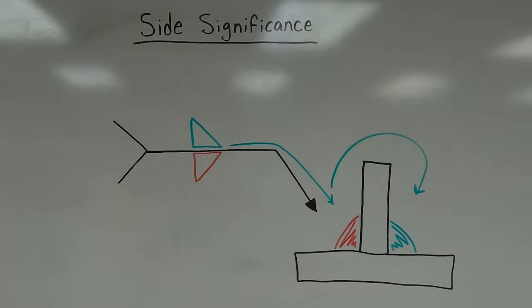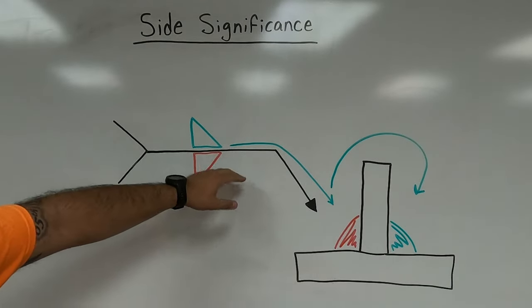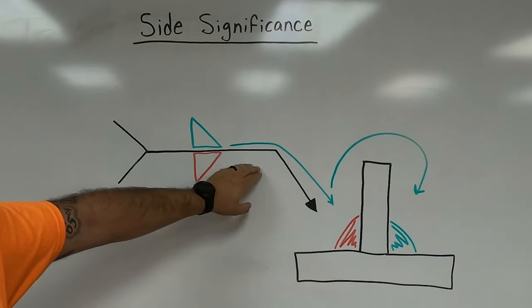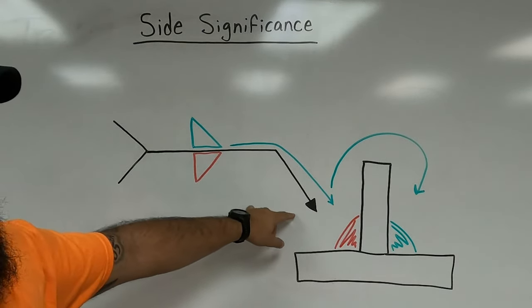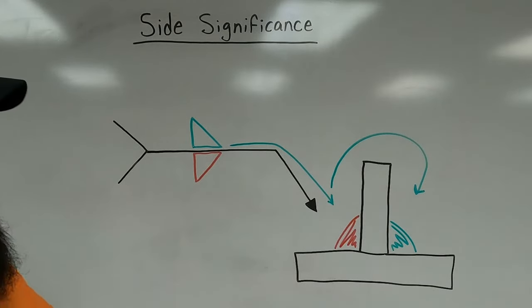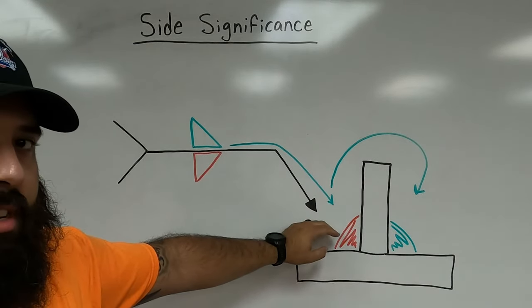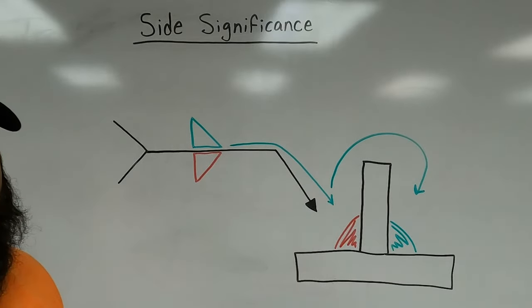That's essentially what side significance is. Arrow side: deposit the weld on the side of the joint that the reference line points to. Other side: find where the reference line is pointing, then skip to the opposite side of that joint.